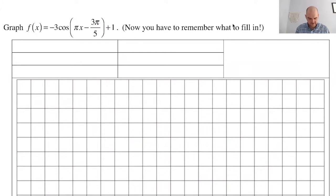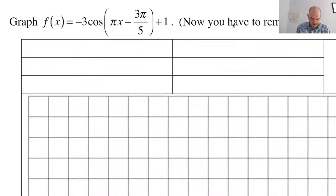We have to remember what to fill in. So first, we're going to find the period. So 2π divided by π is 2. Increment is the period divided by 4. So that's going to be 2 over 4 or 1 half.